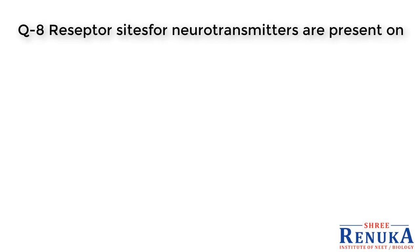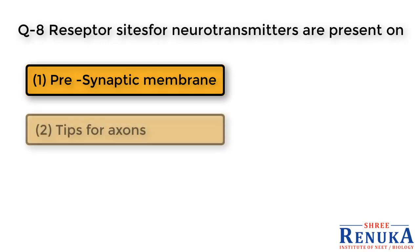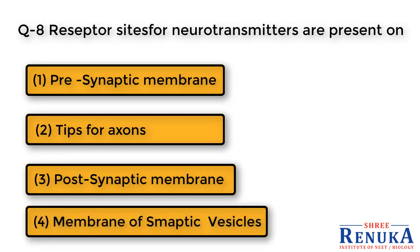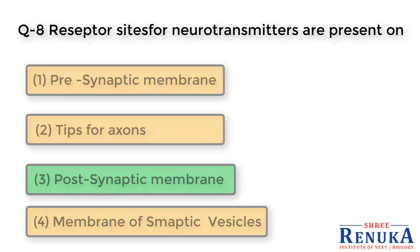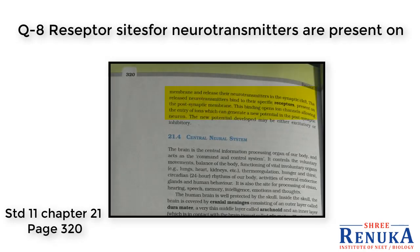Question 8: Receptor sites for neurotransmitters are present on — options: 1. Presynaptic membrane, 2. Tips of axons, 3. Post-synaptic membrane, 4. Membrane of synaptic vesicles. The answer is 3, post-synaptic membrane. As stated in the Class 11 NCERT textbook, Chapter 21, page 320, it is clearly mentioned that receptor sites for neurotransmitters are present on the post-synaptic membrane.